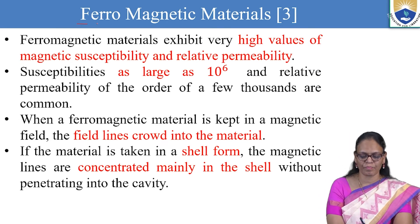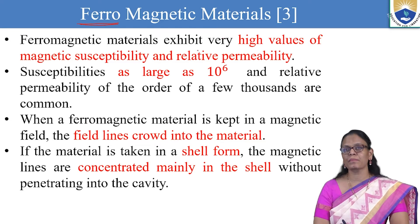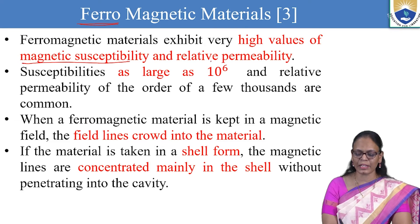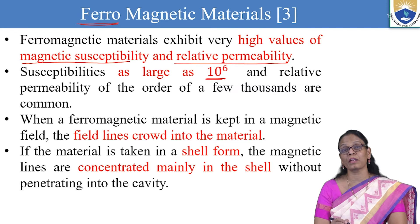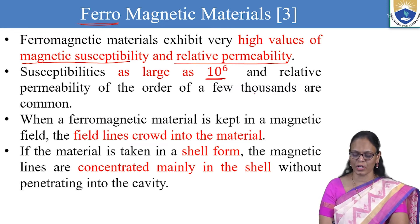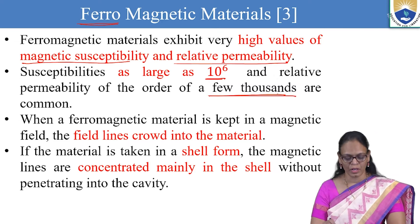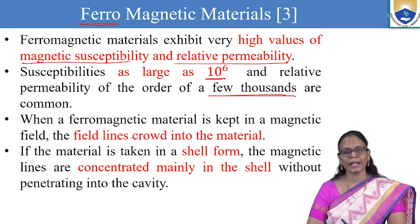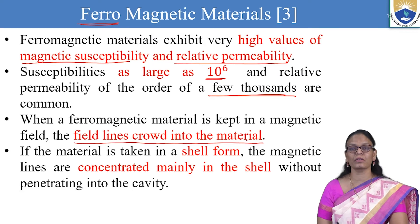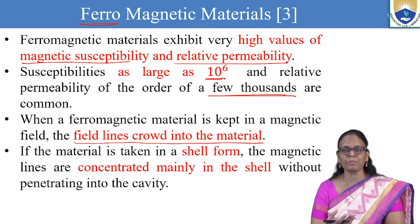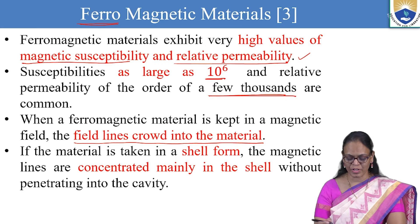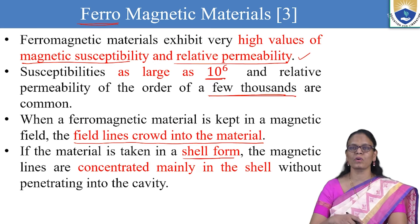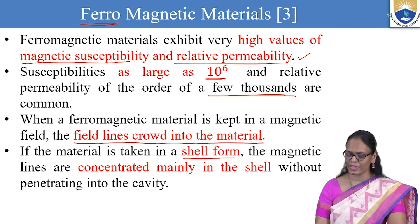Ferromagnetic materials exhibit very high values of magnetic susceptibility and relative permeability, of the order of 10 to the power 6, while relative permeability is of the order of a few thousands. When a ferromagnetic material is kept in a magnetic field, the lines crowd into the material because it is highly permeable. When taken in the form of a shell, the magnetic lines are mainly concentrated in the shell only, without extending into the cavity.